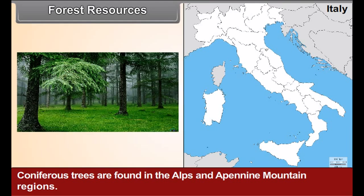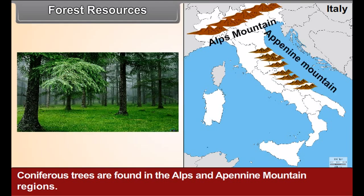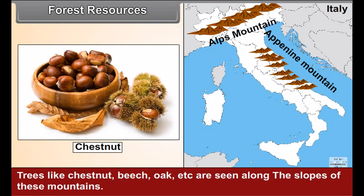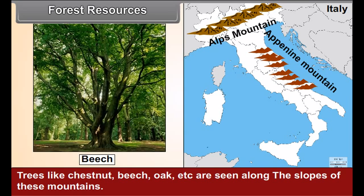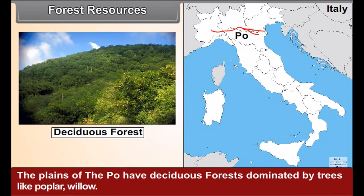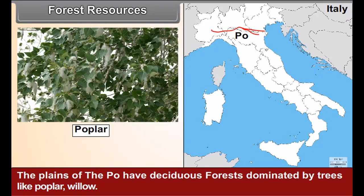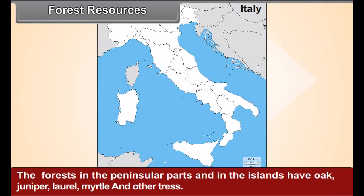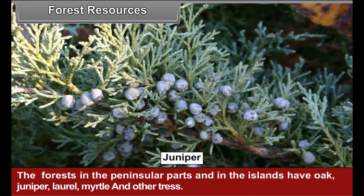Forest resources: coniferous trees are found in the Alps and Apennine mountain regions. Trees like chestnut, beech, and oak are seen along the slopes of these mountains. The plains of the Po have deciduous forests dominated by trees like poplar and willow. The forests in the peninsular parts and islands have oak, juniper, laurel, myrtle, and other trees.